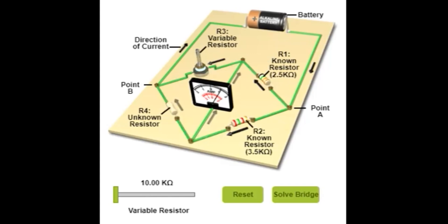Out of these four resistors, R1 is a known resistance. We know its value — it is given here as 2.5 kilo ohms. That is a known resistance.